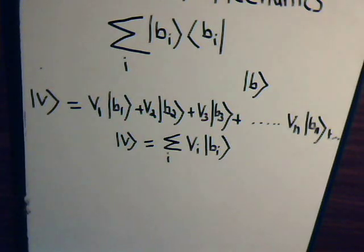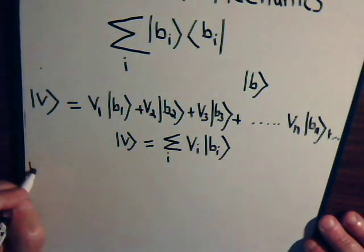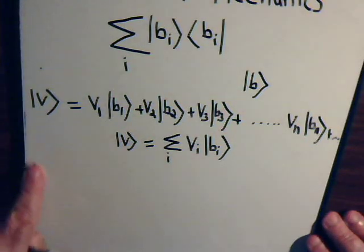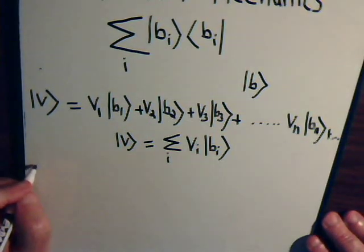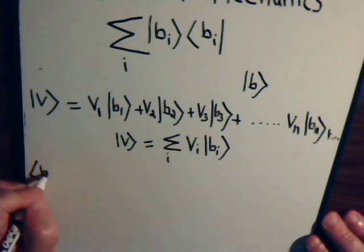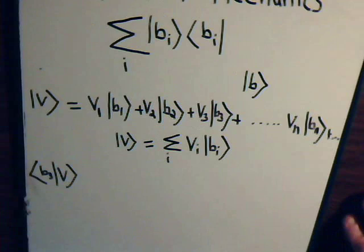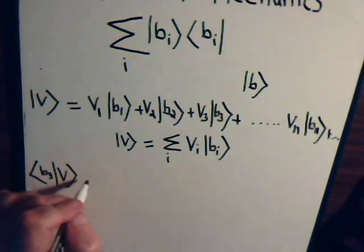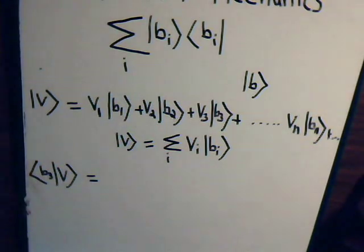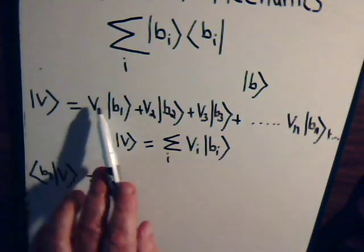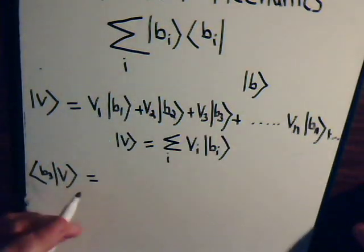Say we use b3. So now we have b3. This will equal our vector b3, the inner product with this side. So we're going to have like this.